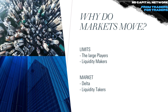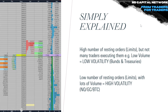First we have to understand the difference between a limit order and a market order. The limit order is primarily used by liquidity makers — large players. The market order, also known as delta, is the liquidity taker. Looking at the DOM (depth of market) as an example: the DOM is where advertisements — resting orders — are placed and executed against market orders. These are often called the heavier hand in the market, as large players cannot afford to use market orders because they would get considerable slippage.